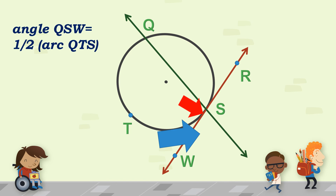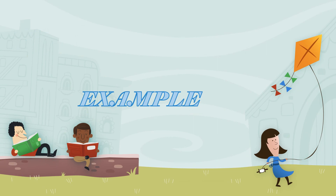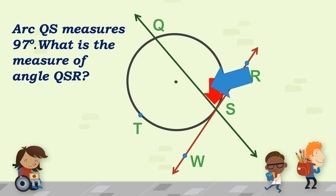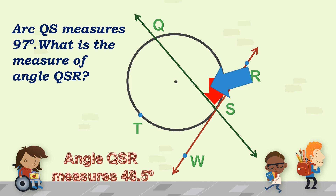Example: arc QS measures 97 degrees. What is the measure of angle QSR? Angle QSR is indicated by the red arrow. Since we know arc QS is 97 degrees, we divide by 2 — the measure of angle QSR is equal to 48.5 degrees.